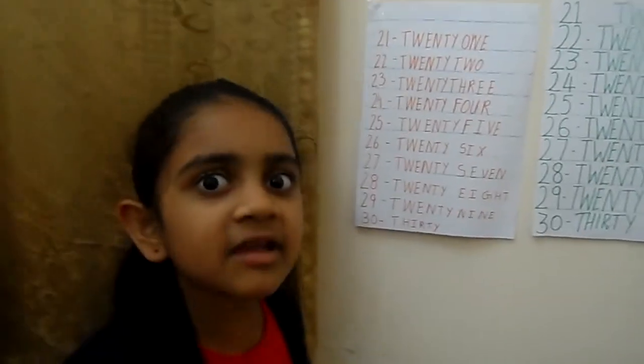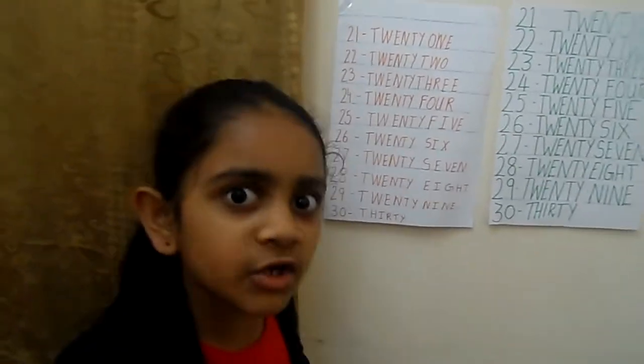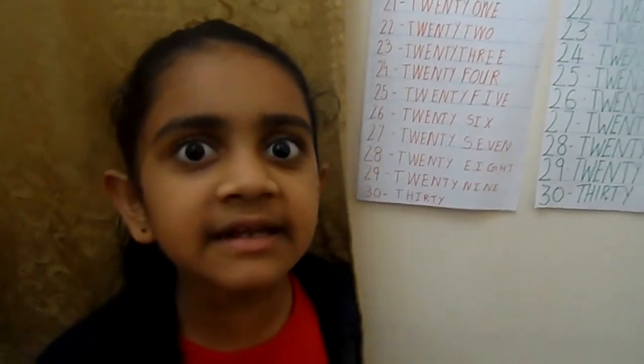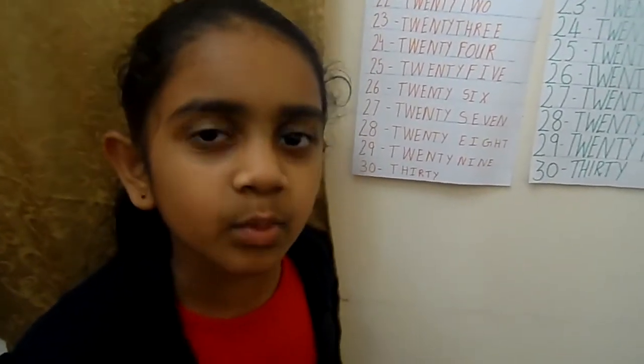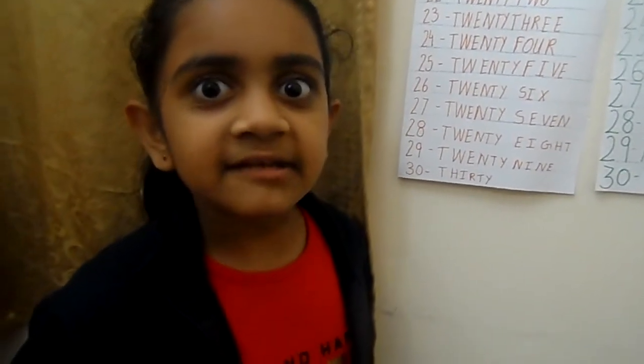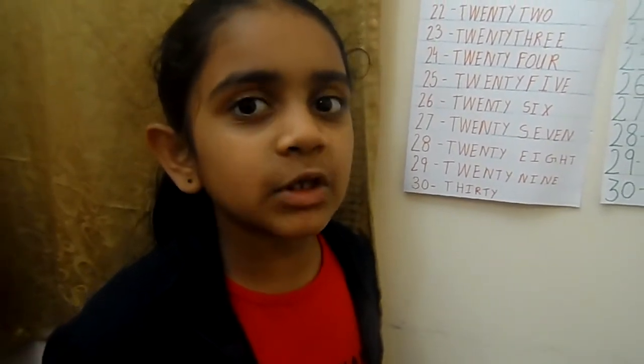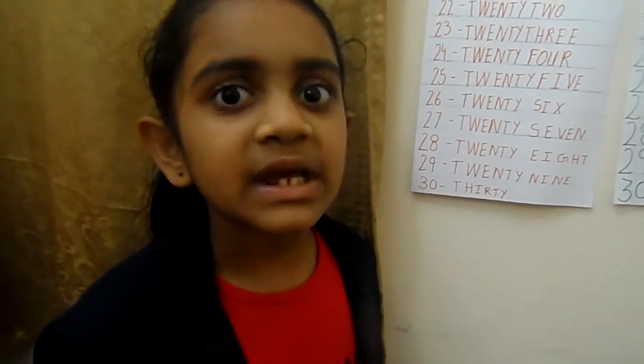So everybody, I think you all know it. Now let's revise it one more time. 21: T, W, E, N, T, Y, O, N, E. 22: T, W, E, N, T, Y, T, W, O. Next, 23: T, W, E, N, T, Y, T, H, R, E, E. Next, 24: T, W, E, N, T, Y, F, O, U, R.